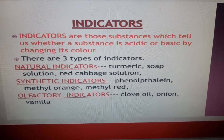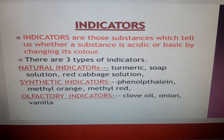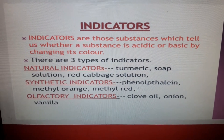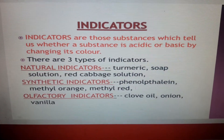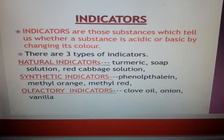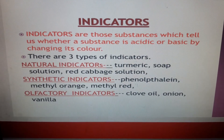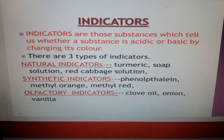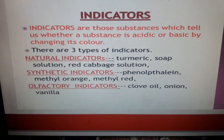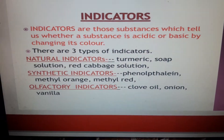What are indicators? Indicators are substances which change their color in acidic and basic solutions. If you add an indicator to an acidic solution or a basic solution, the color will change, and from the change in color we can understand whether it is an acid or a base. There are three types of indicators: natural indicators, synthetic indicators, and olfactory indicators.